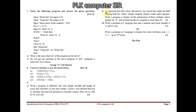Question 9b is from file handling: a sequential data file called 'record.txt' has stored data with fields: roll number, name, gender, English marks, polymaths, and computer marks. Write a program to display all information of students whose gender is 'F' and marks obtained in Computer is more than 90.